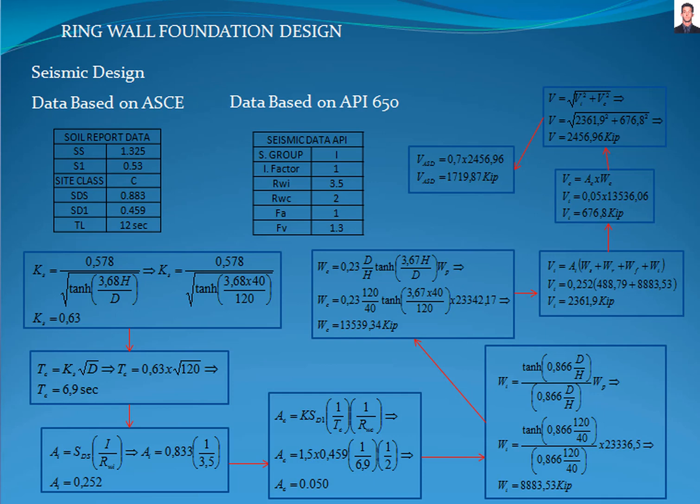We calculate the sloshing period coefficient Ks with the equation E4.5.2-C resulting in 0.63 and the convective sloshing period TC with the equation E4.5.2-B resulting in 6.9 seconds.